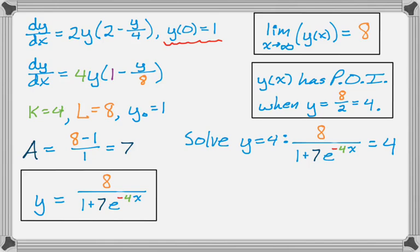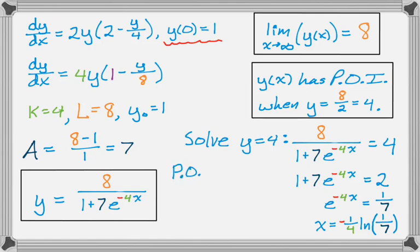And here I'm kind of cross-multiplying. Hopefully you can follow the math. I feel like if you're doing the logistic differential equation, you can probably follow the math here. I'm going to subtract 1 and divide by 7. And then I'm going to take some natural logs and also solve. So I get x equals negative 1 fourth natural log of 1 seventh. Okay, so that answers kind of the final question that I might have been asked. So the point of inflection occurs when x is equal to negative 1 fourth natural log of 1 seventh.